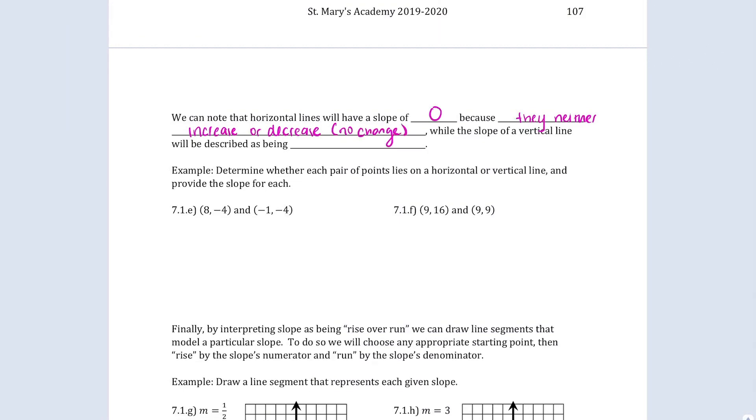Well, the slope of vertical line will be described as being undefined. Because it rises, but it doesn't run, right? And if our rise is some positive or negative value and our run is zero, that number over zero doesn't actually exist. Therefore, it is undefined.